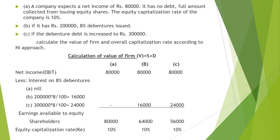In the first case there is no debt; in the second case debentures of 2 lakhs are issued; in the third case debentures of 3 lakhs are issued. We need to calculate the value of the firm and the overall capitalization rate. The value of the firm equals S plus D — market value of equity shares plus market value of debentures.